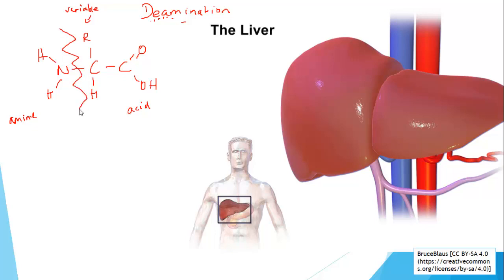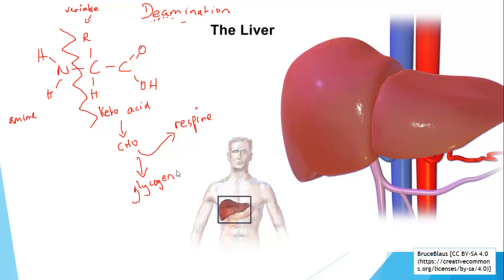In deamination, we break the bond between the nitrogen and the carbon of the amino acid. That leaves us with what is called a keto acid, which we can convert to a carbohydrate. We can either respire that carbohydrate or, since we're already in the liver, store it as glycogen - that lovely polymer of alpha glucose. The amine end is converted from NH2 into NH3, which is ammonia. Ammonia is extremely toxic at relatively low concentrations, so we detoxify it by converting it into urea.